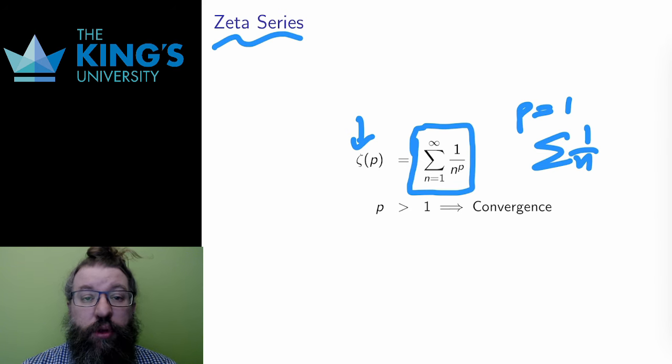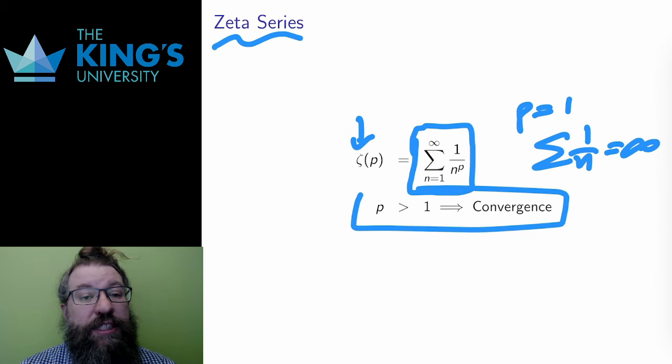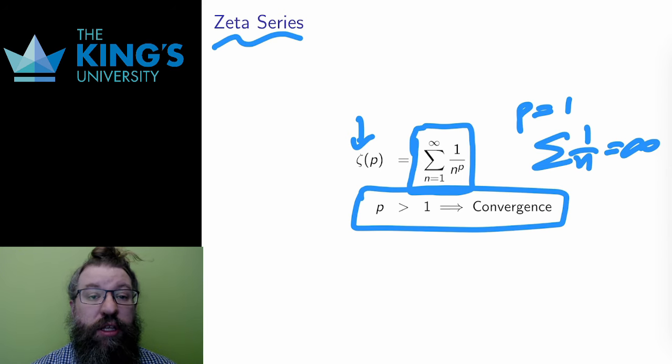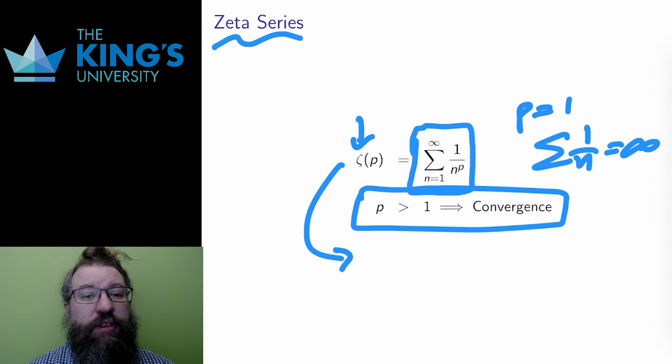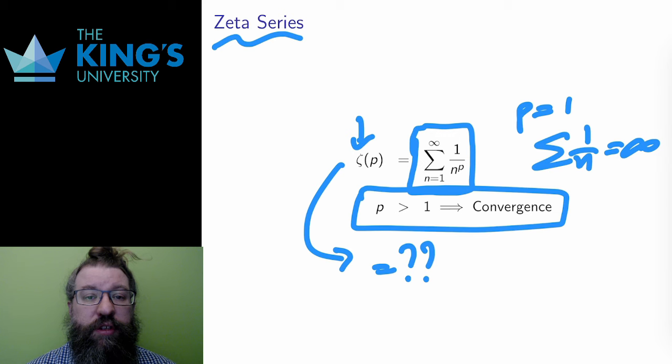I know the zeta series diverges for p equals one because I know the harmonic series diverges. Previous videos have shown that. However, for any exponent even slightly larger than one, this converges. The convergence criteria for the zeta series is p larger than one. Unlike the geometric series, I don't have a nice expression for the value of this series. It's not really expressible in other functions. Zeta of p is really the best way to write these outputs.